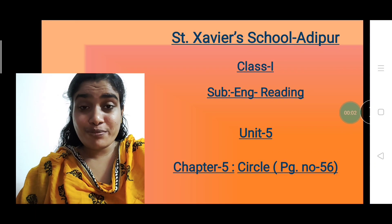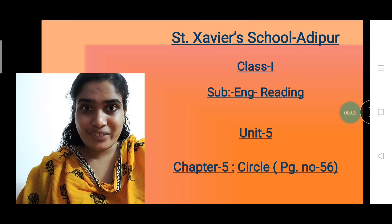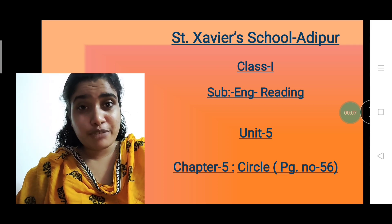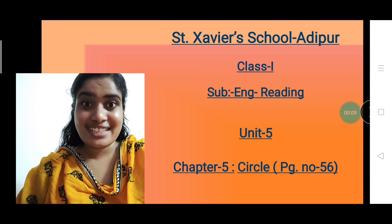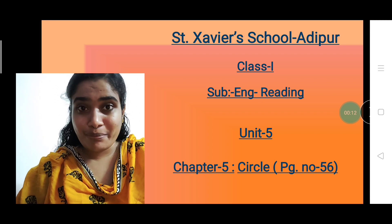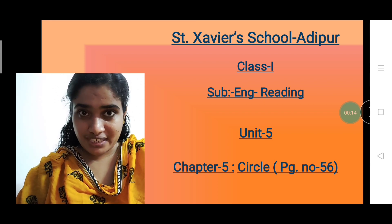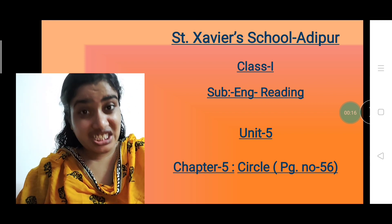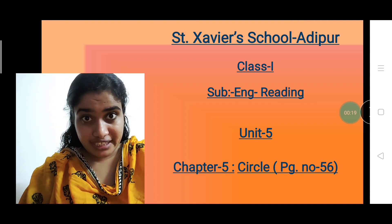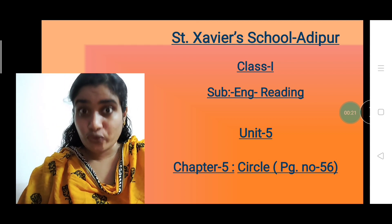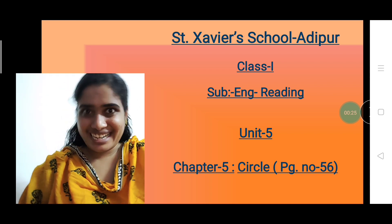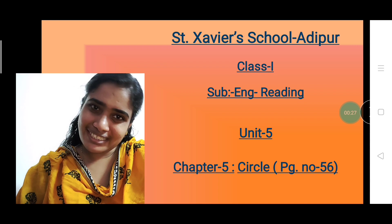Hello kids, hope you all are doing well. Today we are going to do English reading of Unit No. 5, Chapter No. 5, Circle. So take out your Marigold Textbook, page No. 56. We are going to read each and every word, lines and paragraphs. You have to read along with me. Let's start with the chapter.